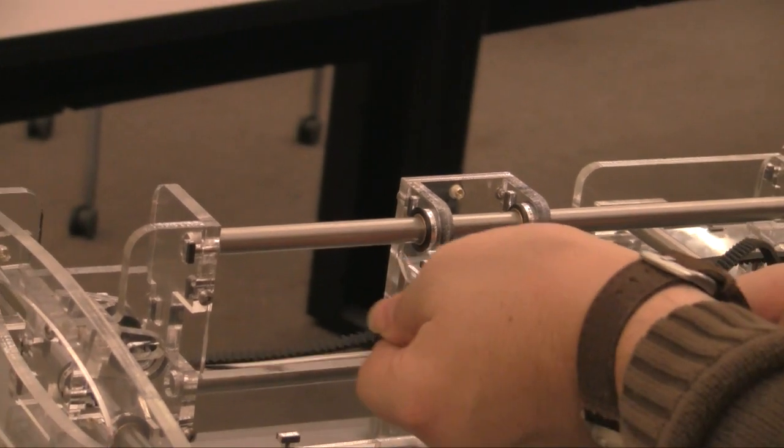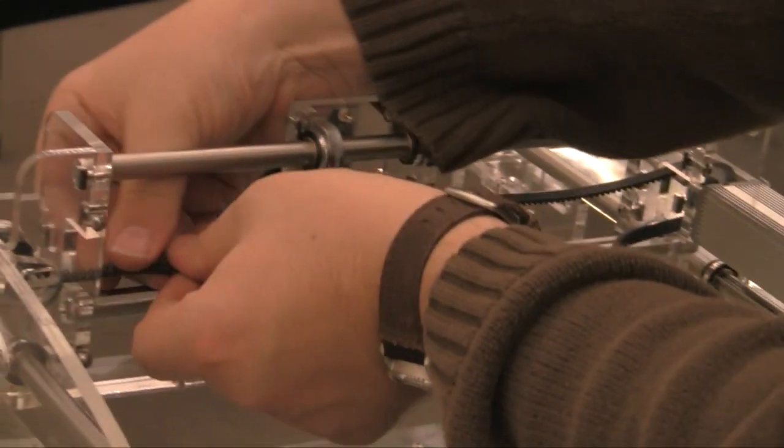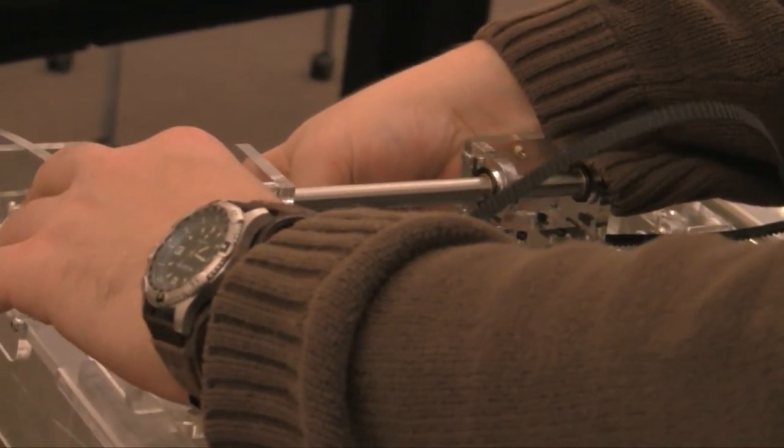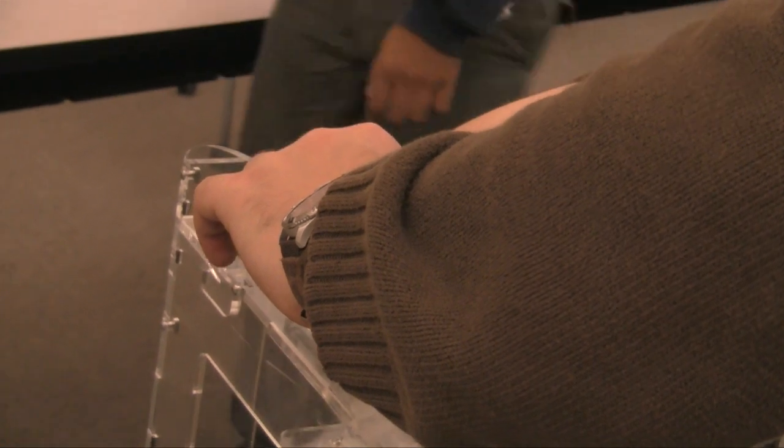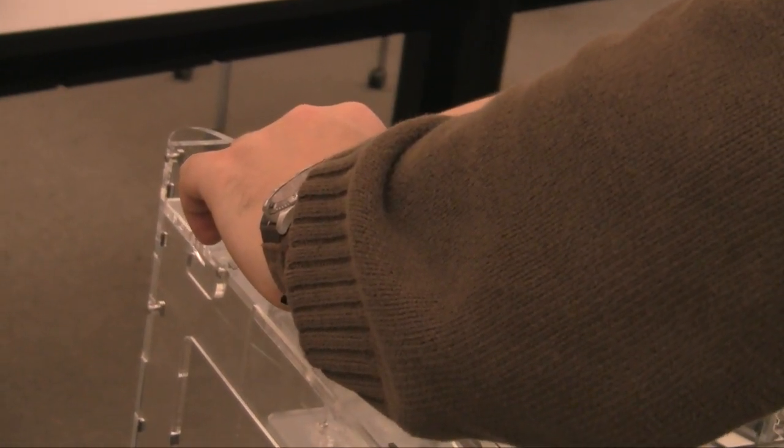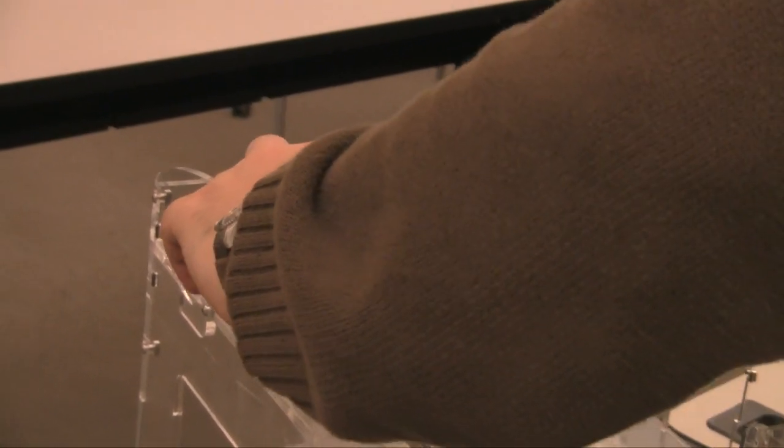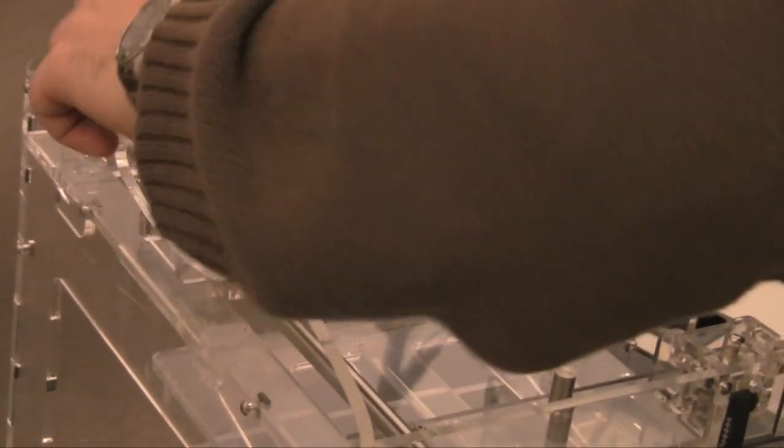Pull the belt around the tensioner pulley and up. If you have trouble getting it around the pulley, try pushing it through at an angle.